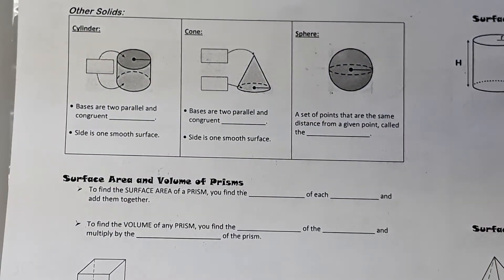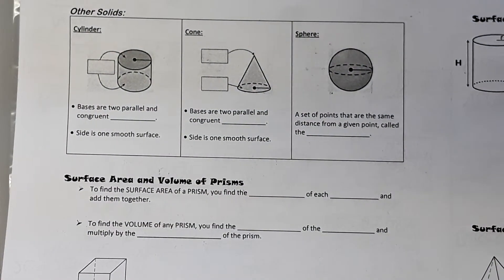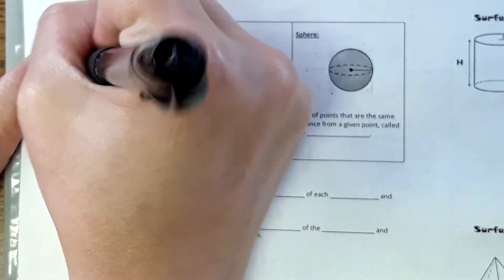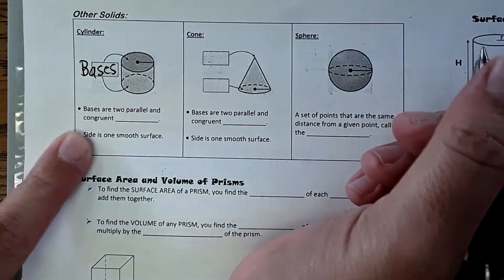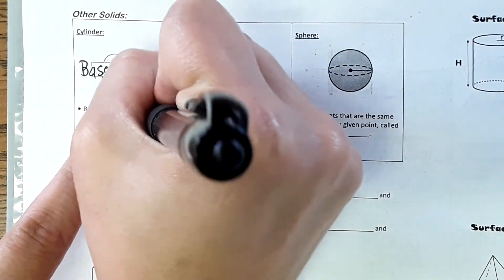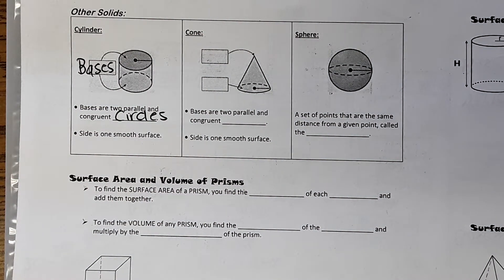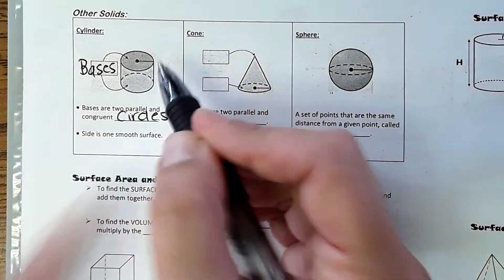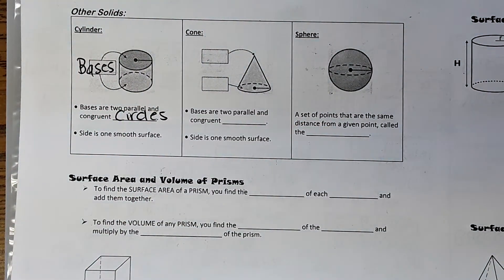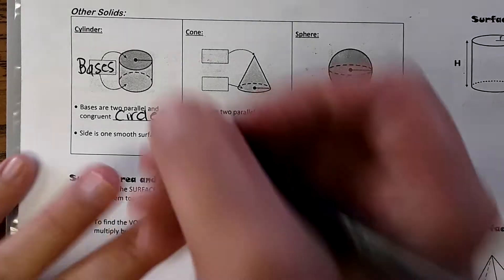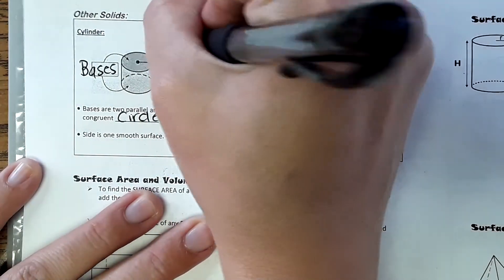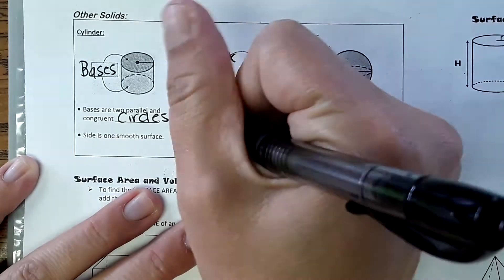Other solids: first, a cylinder has two bases that are circles — two parallel congruent circles. The side around it is a smooth surface, which is actually a rectangle that wraps around. For a cone, we have a base which is a circle and a top vertex.